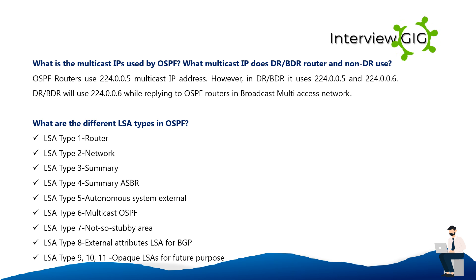What multicast IPs does OSPF use? What multicast IP do the DR, BDR, and non-DR routers use? OSPF routers use the 224.0.0.5 multicast IP address. However, the DR and BDR also use 224.0.0.5 and 224.0.0.6. The DR and BDR will use 224.0.0.6 when replying to OSPF routers on a broadcast multi-access network.